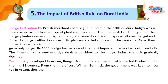Indigo cultivation by British merchants had begun in India in the 18th century. Indigo was a blue dye extracted from a tropical plant used as a colorant. The Charter Act of 1833 granted the indigo planters ownership rights in land, and soon its cultivation spread all over Bengal and Bihar. As indigo cultivation spread, the planters started oppressing the peasants, forcing farmers to grow only indigo. By 1850, indigo formed one of the most important items of export from India.